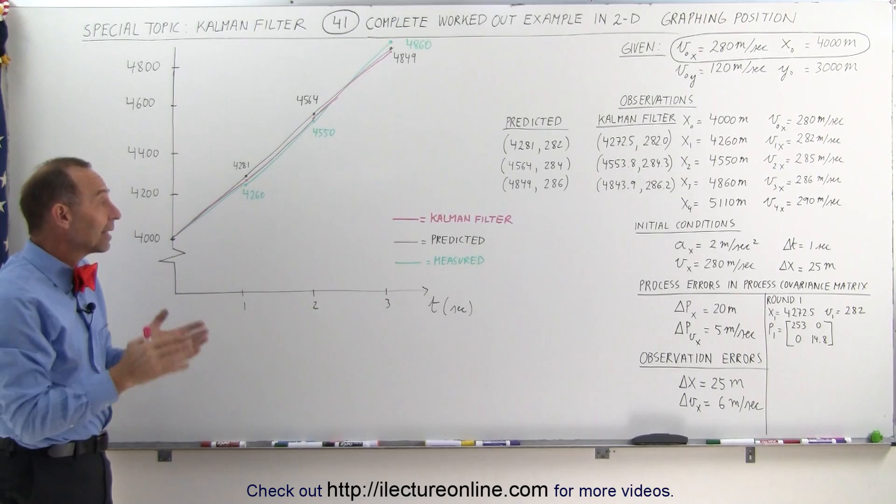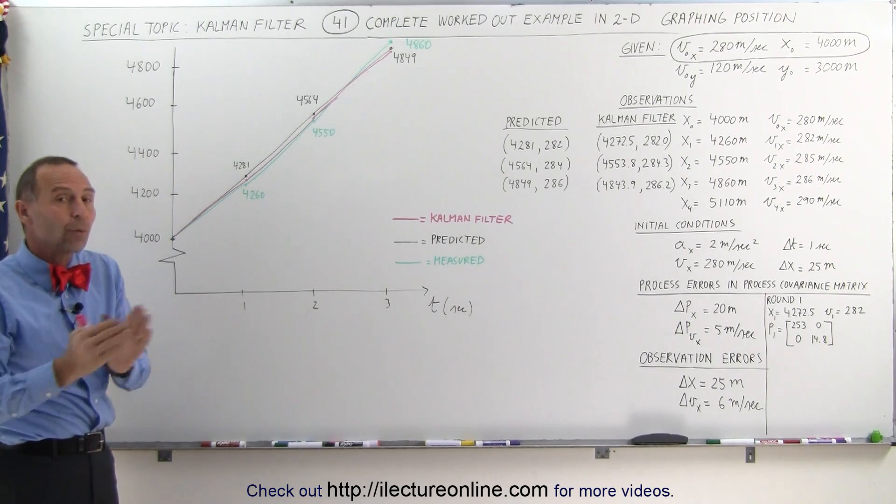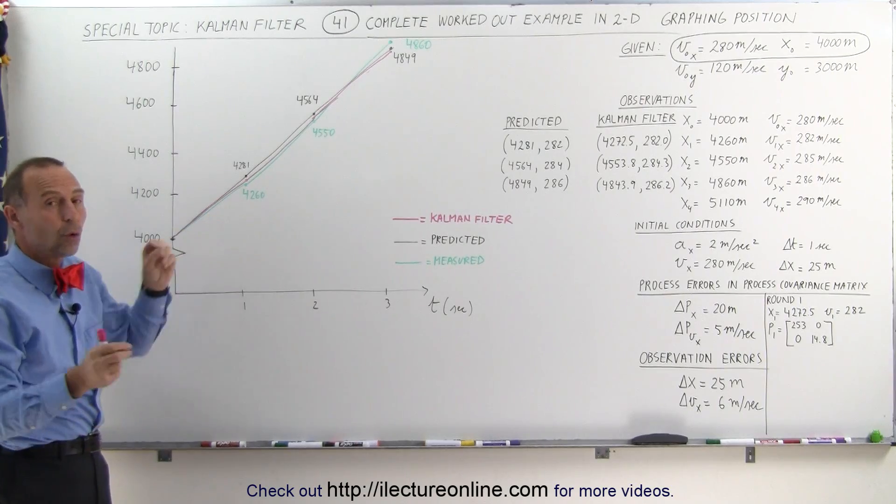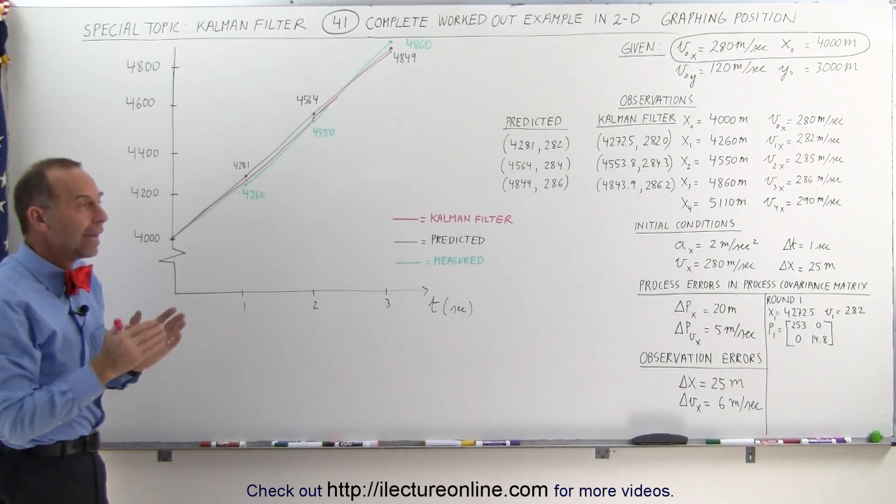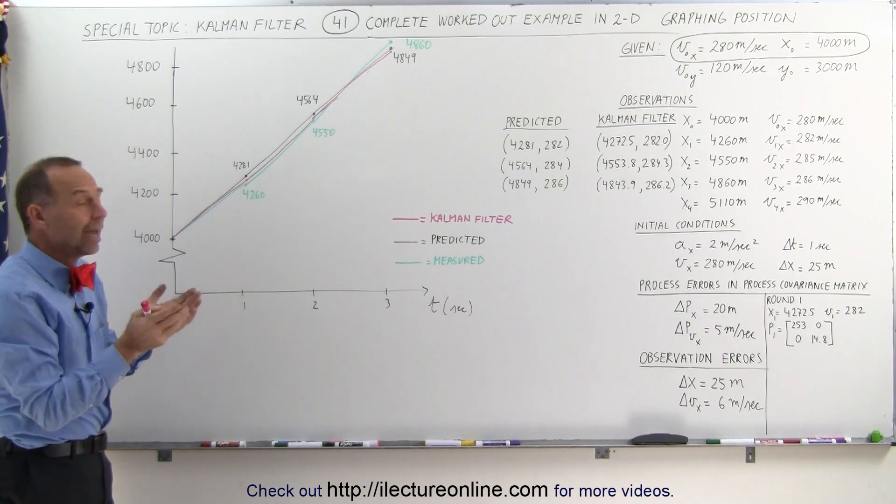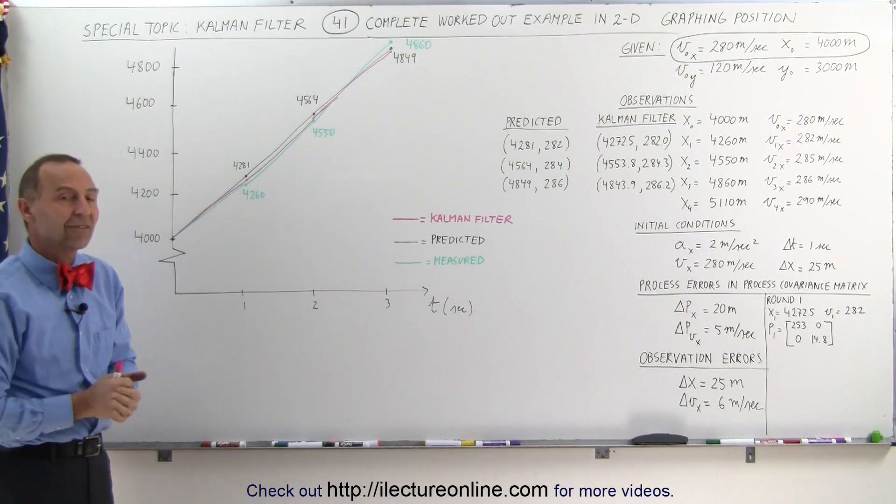So the whole idea behind the Kalman filter is to find the correct weighting value between the predicted values and the measured values according to how things are coming along and how erratic the measurements are from the tracking mechanism and how the predicted values stack up against that.